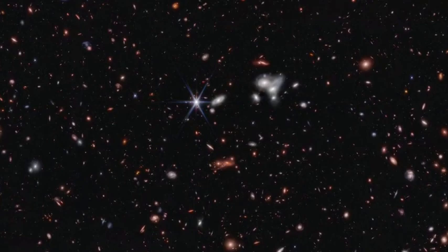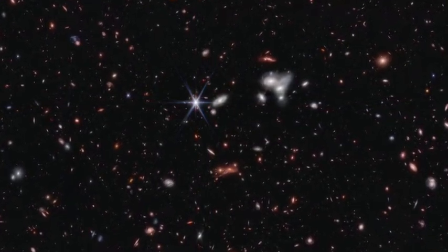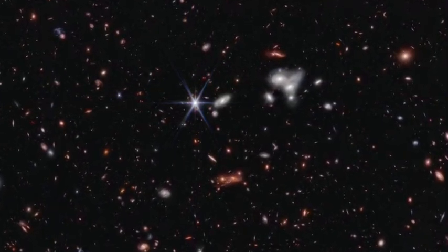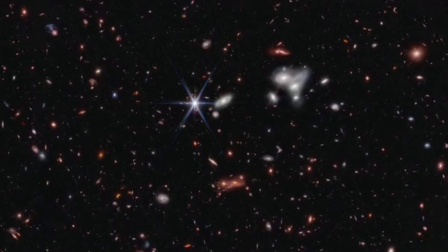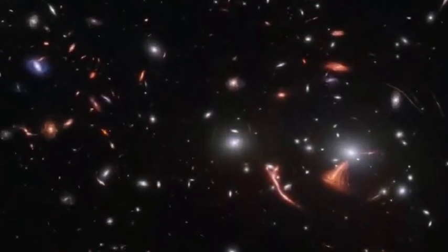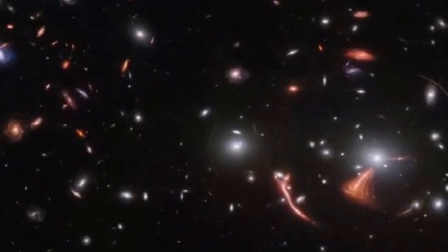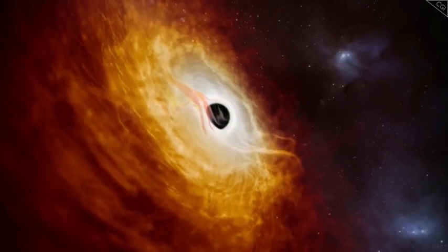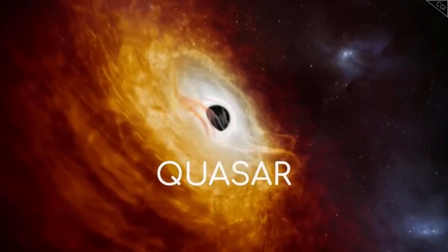You likely won't discern distinct individual objects within these distant galaxies as they are too far away and merge with other light sources. However, there is one exception. One type of object is so luminous that it can be seen from billions of light years away, standing out from all the stars in its host galaxy, a quasar.